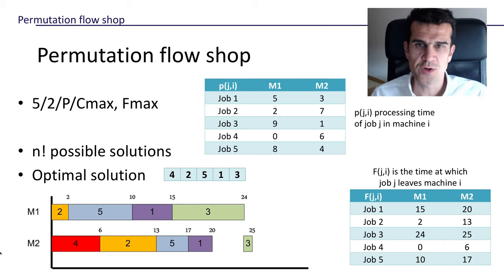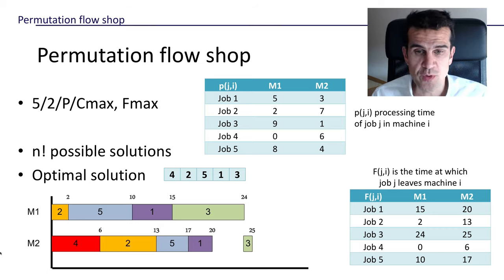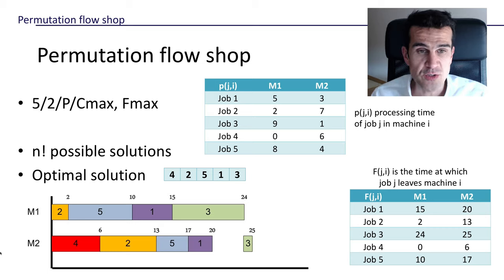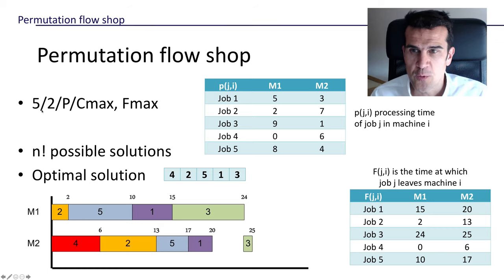In this video we're going to learn how to compute the completion time for every job in a static permutation flow shop. This is very important because later we're going to try to find good solutions for this kind of problem, and in order to know whether a solution is good or not, we have to be able to see how long it takes to complete each of the jobs. We'll learn this with a particular example: five jobs and two machines.